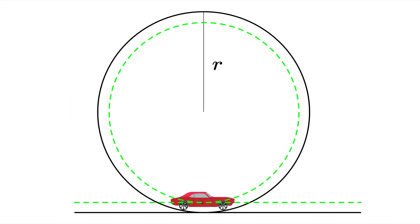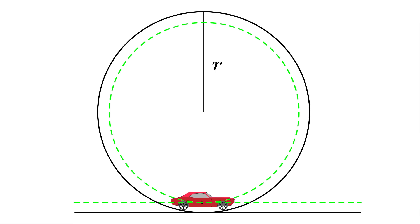What this means is that we can effectively say that it is not a car completing the loop of radius r, but it is the center of mass of the car completing the loop of radius r minus L.